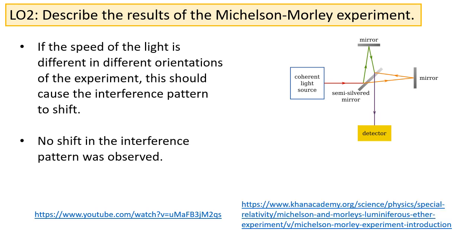Michelson-Morley attempted this experiment in several different orientations. However, no shift in the interference pattern was observed. This implied the speed of light was indeed the same for all observers.